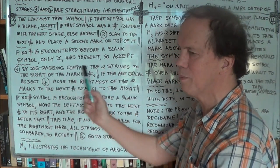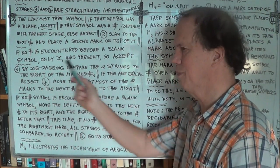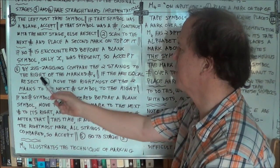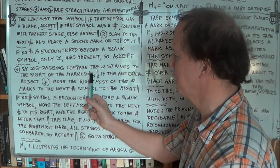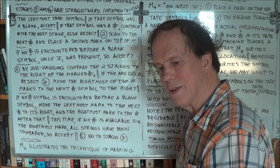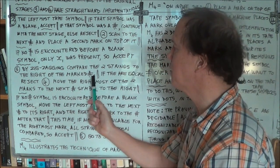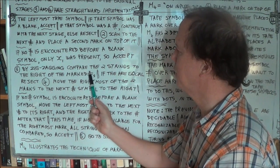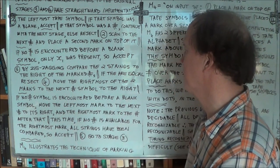Now you go back to an earlier example where you're comparing two strings — what Sipser calls zigzag, commuting back and forth. You compare the two strings to the right of the two marked hashes. The hash symbols have been changed somewhat — we'll talk about that in a minute. So you compare the two strings to the right of the two modified hash symbols.